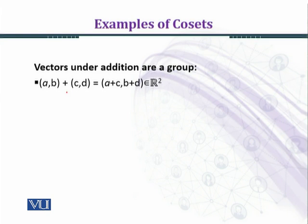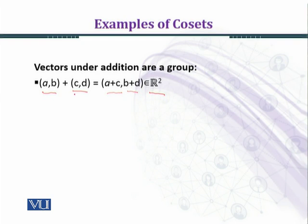To prove this we choose two elements (a, b) and (c, d) in R². When we add these two elements we get (a+c, b+d), adding the first coordinates together and the second coordinates together. Since a+c and b+d are both real numbers, this ordered pair (a+c, b+d) is in R².